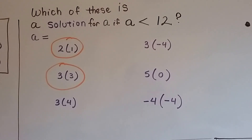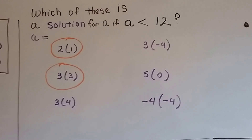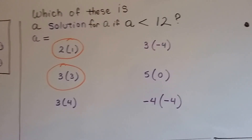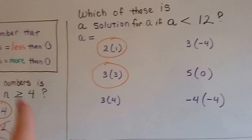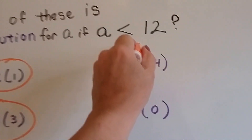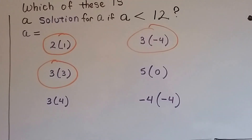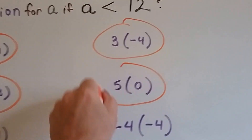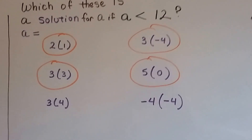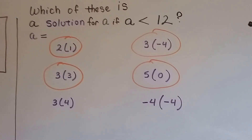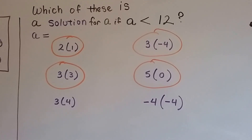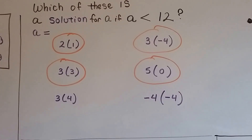What about 3 times negative 4? When we have a positive 3 and a negative 4 and multiply them together, we get a negative — a negative and a positive make a negative. So that would be negative 12. Negative 12 is definitely less than 12, because if it's negative, it's less than 0. So that is a solution. How about 5 times 0? Anything times 0 is 0, and 0 is less than 12. What about negative 4 times negative 4? When you multiply two negatives together, it makes a positive — positive 16. 16 is not less than 12, so that's not an answer.